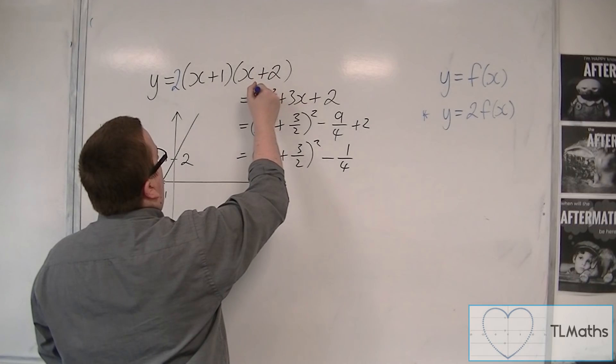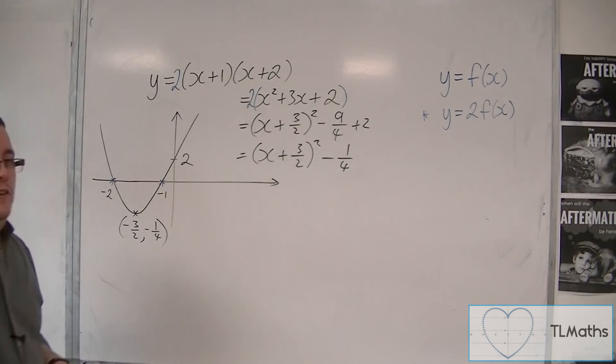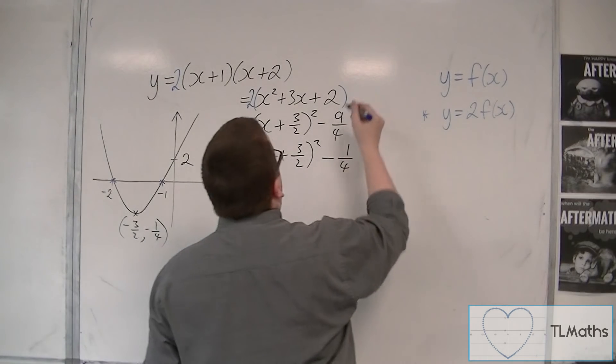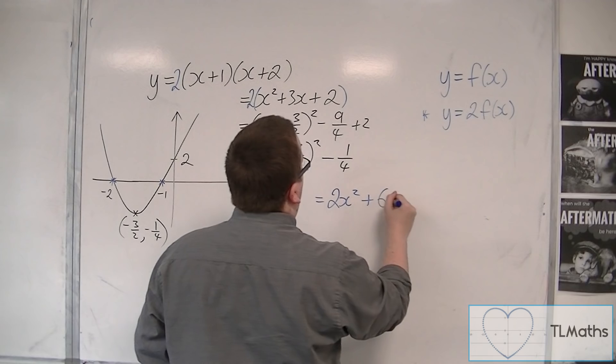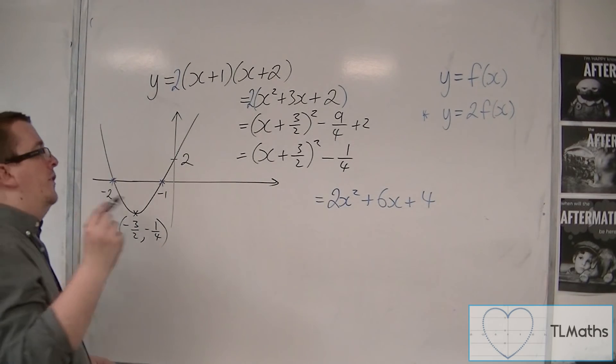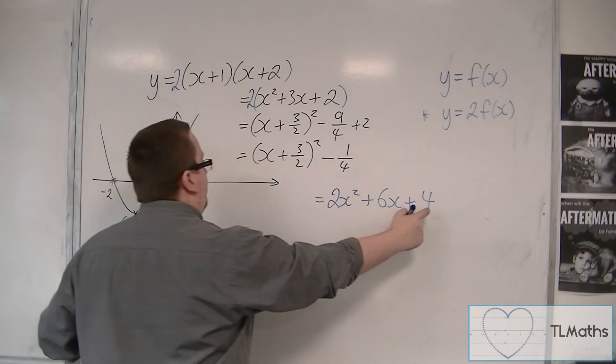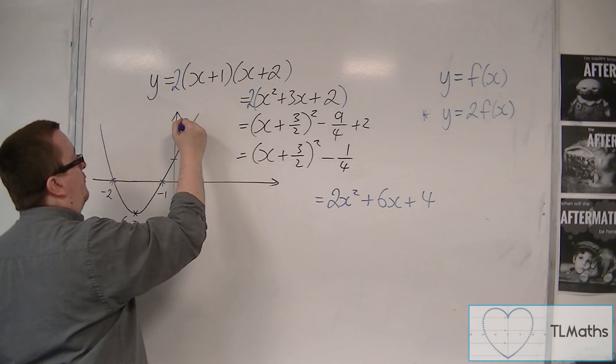Now, when I expand the brackets, I would have 2 lots of x squared plus 3x plus 2. So I would actually have 2x squared plus 6x plus 4. So I now know that the curve is going through 4 on the y-axis, not 2.